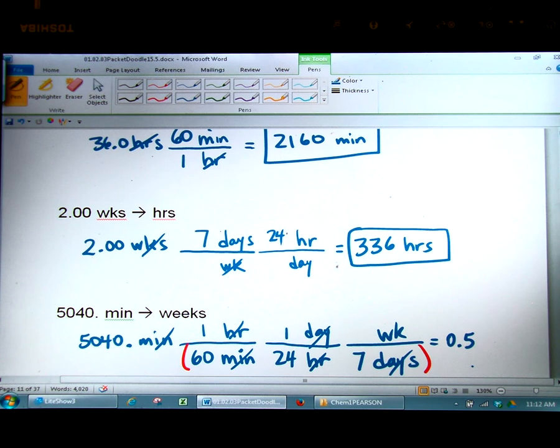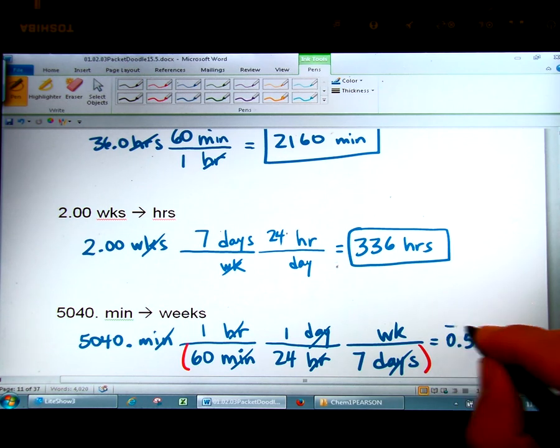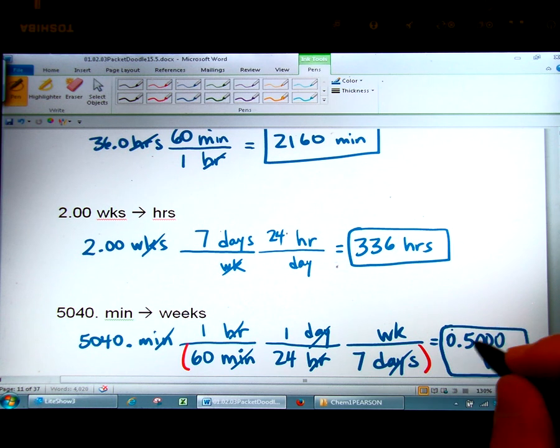Well, if you do it correctly, you're going to find out that the answer is 0.5. Half of a week. Let's just find our sig figs now. 5,040 has four sig figs because there is a decimal for the ending zero to count. So there are four sig figs. This only has one sig fig because beginning zeros never count. And so this is going to be 0.500 weeks, which means that 5,040 minutes is half of a week.